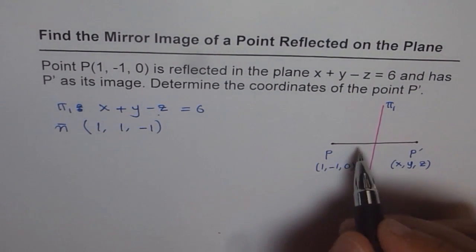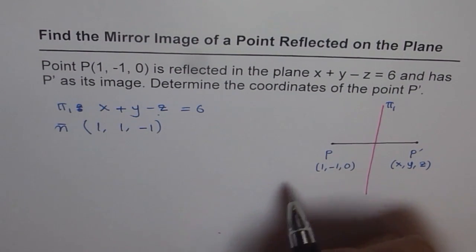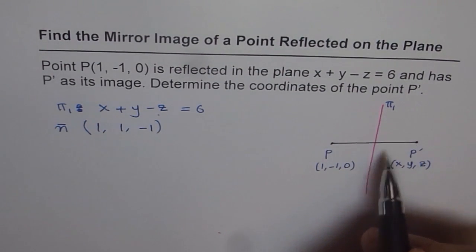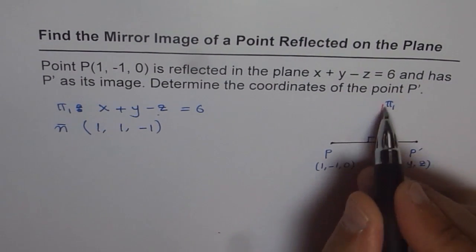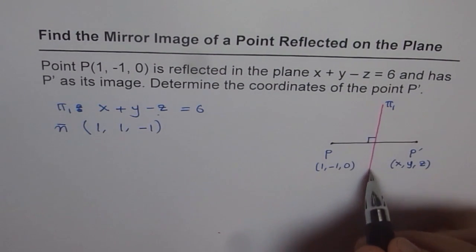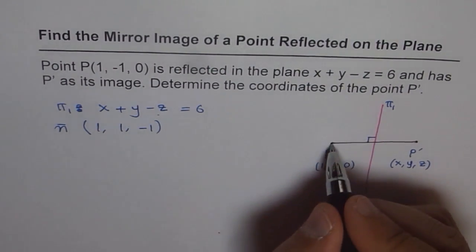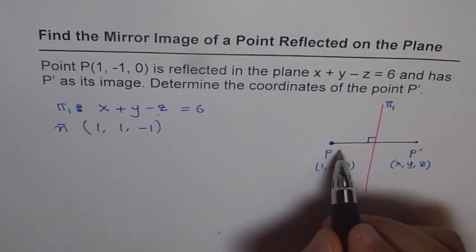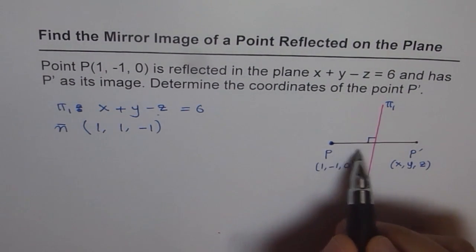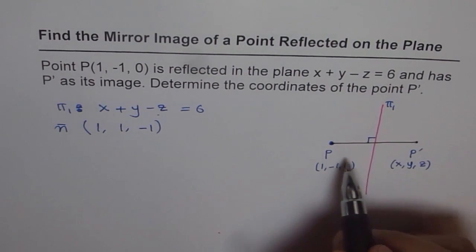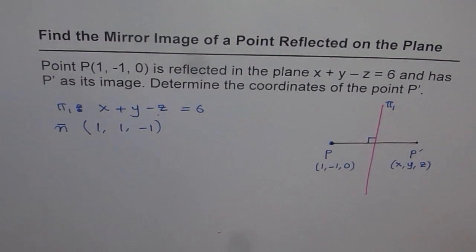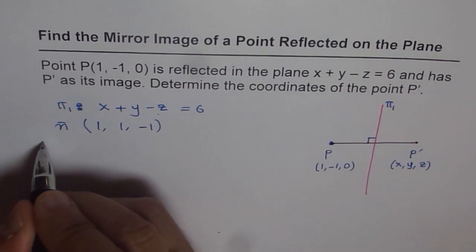The normal is a vector perpendicular to the plane. When finding a mirror image, the line joining the point with its mirror image should be at 90 degrees to the plane — that is, along the normal. This means we know the direction from P to P dash, so we can find the equation of line PP dash, which is along the normal of the plane.